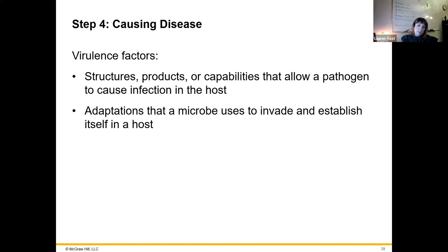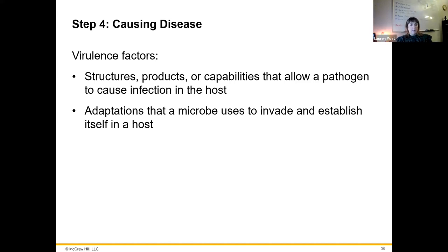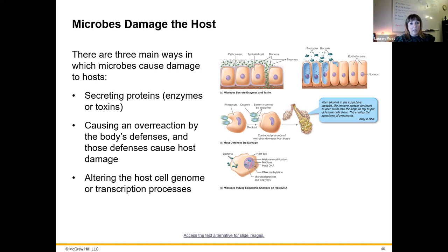Now actually causing the disease itself — we have virulence factors, which include structures, products, and capabilities that allow pathogens to cause infection in the host. It is anything that allows the pathogen to be pathogenic and cause bad symptoms. These allow the organism to survive in the host and cause damage. This could include secreting proteins such as enzymes or toxins — anything that could cause damage or death to host cells.